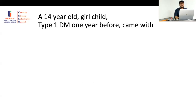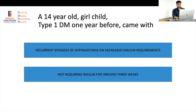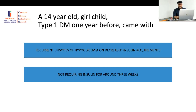Fifth case: 14-year-old girl diagnosed with type 1 diabetes one year earlier and started on insulin. For the past two months she had recurrent hypoglycemia with very minimal insulin requirements — even one to two units of Lantus caused hypoglycemia — and she had not been taking insulin for three weeks. Honeymoon phase is a possibility, but it is more than one year, requirement is near zero, and even small doses cause hypoglycemia.